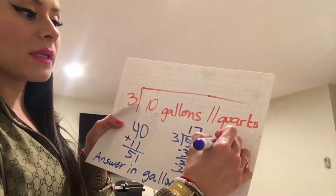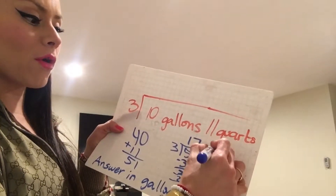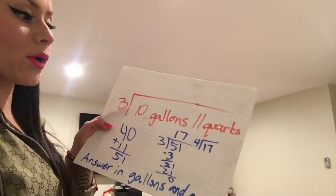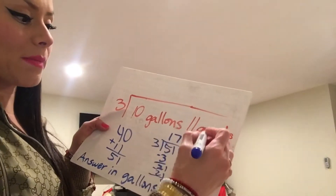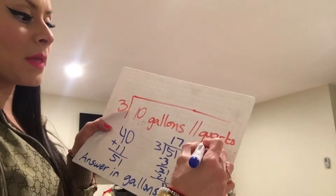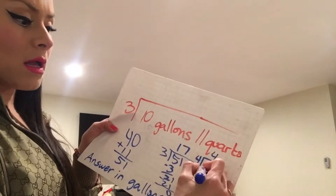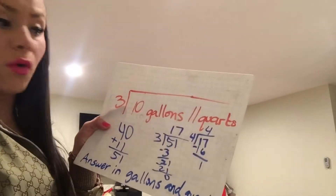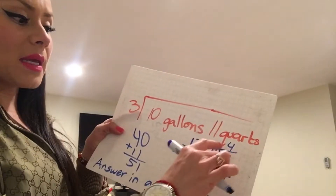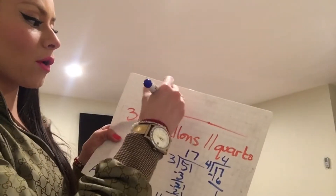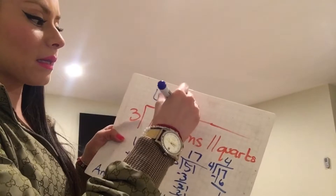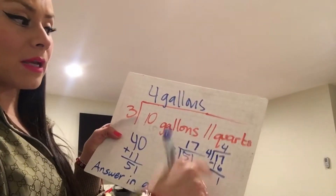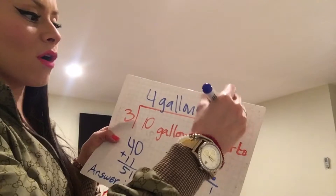Now if we divide 17 divided by 4, that will tell us how many gallons are in 17 quarts. 4 goes into 17 four times, that's 16, and we have 1 left over. So that means our answer is 4 gallons and the remainder of 1 is quarts.